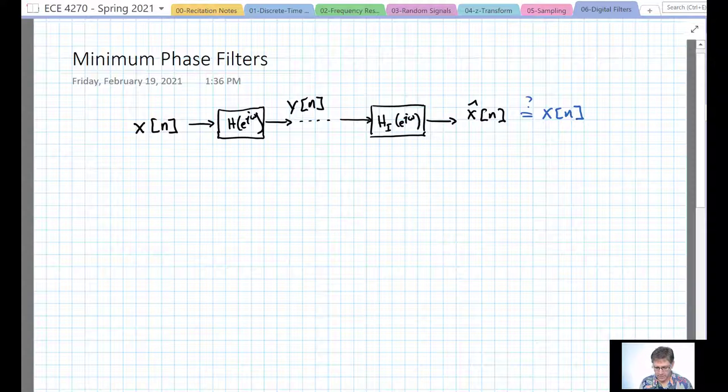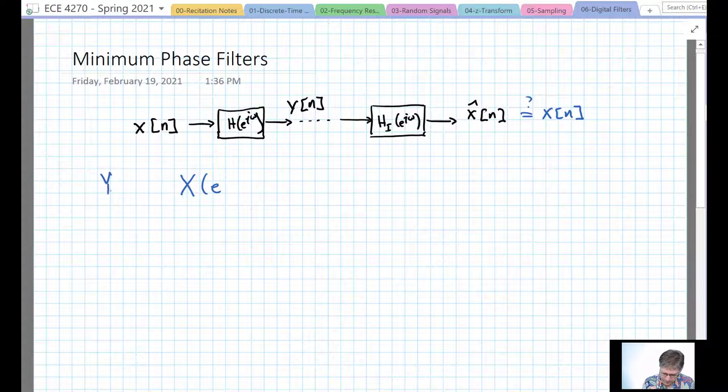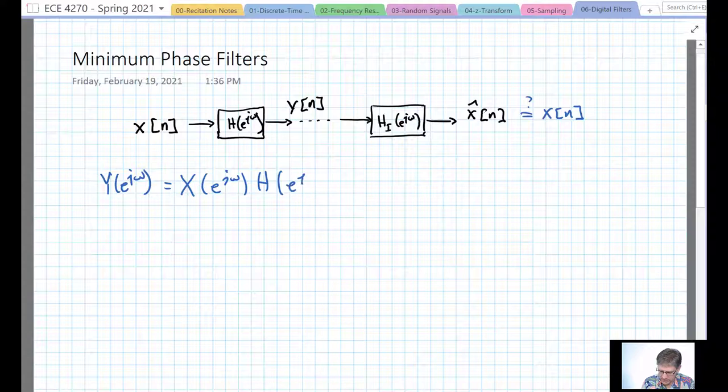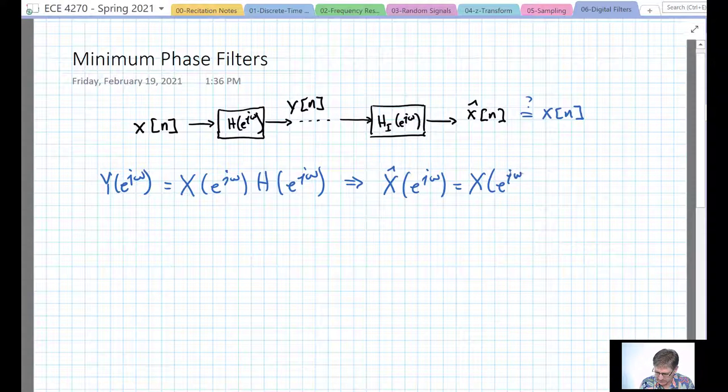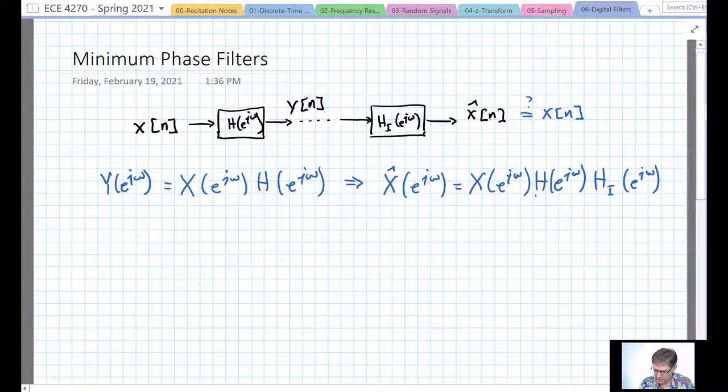Well, in the frequency domain this becomes pretty straightforward. We have Y(e^(jω)) equal to X(e^(jω)) times H(e^(jω)). Therefore, X hat (e^(jω)) will be X(e^(jω)) times H times H_I. All we need is for this to be equal to one.